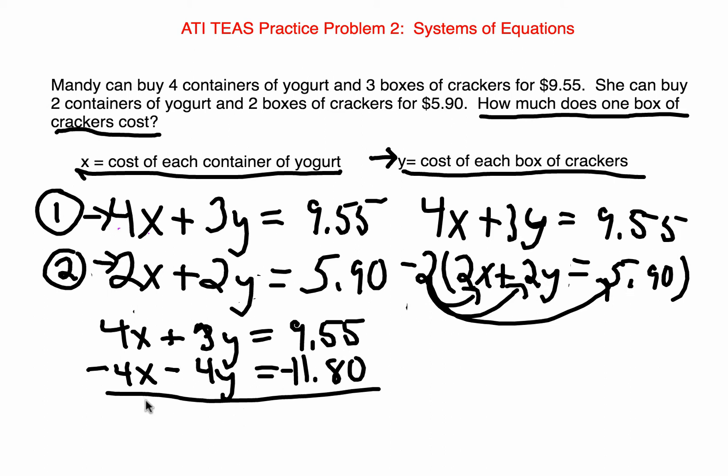Now, to continue the elimination technique, I am going to add all of the like terms together. 4 plus negative 4 is 0. So, I have successfully cancelled my X terms.